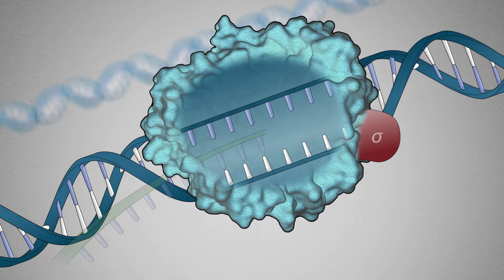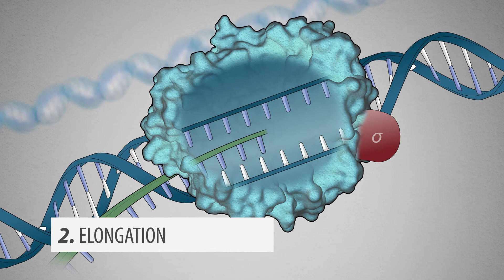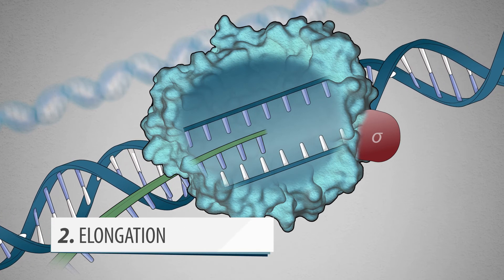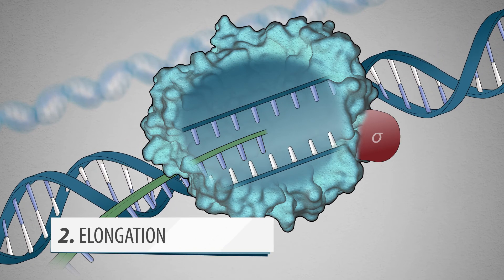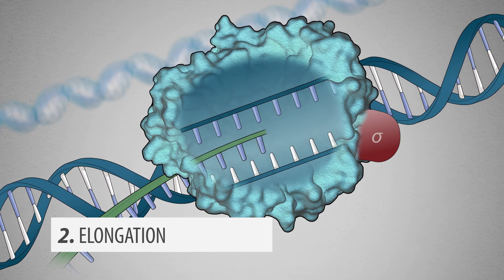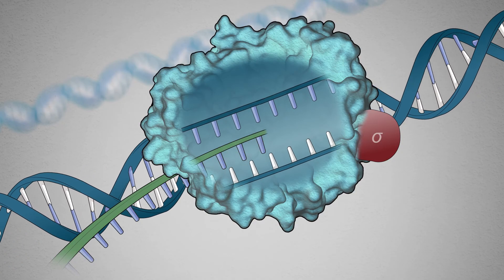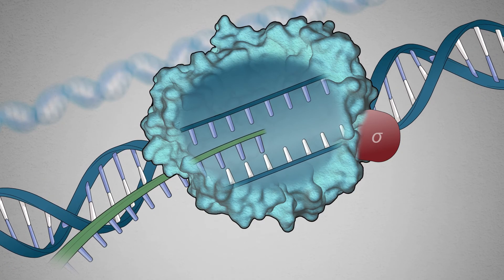Next, the elongation stage begins. During this stage, the RNA polymerase reads the template DNA. Only one strand is read for the base sequence.